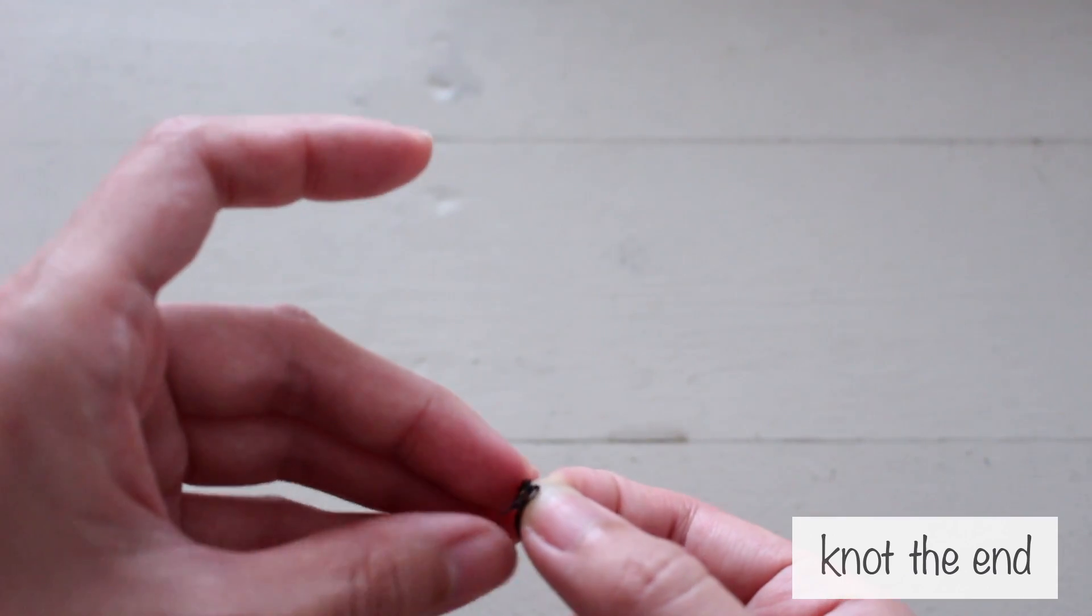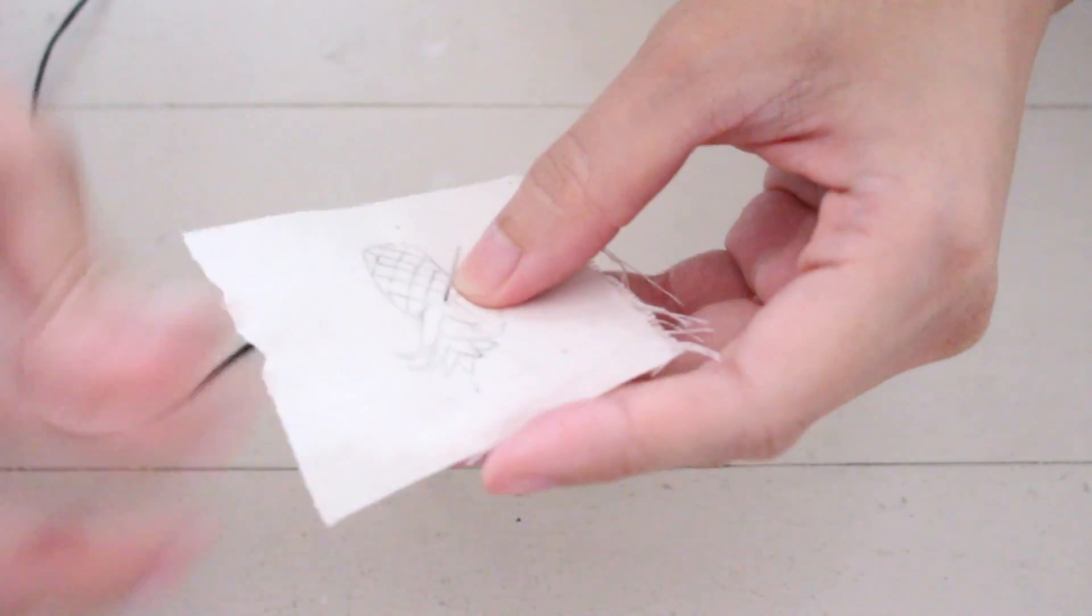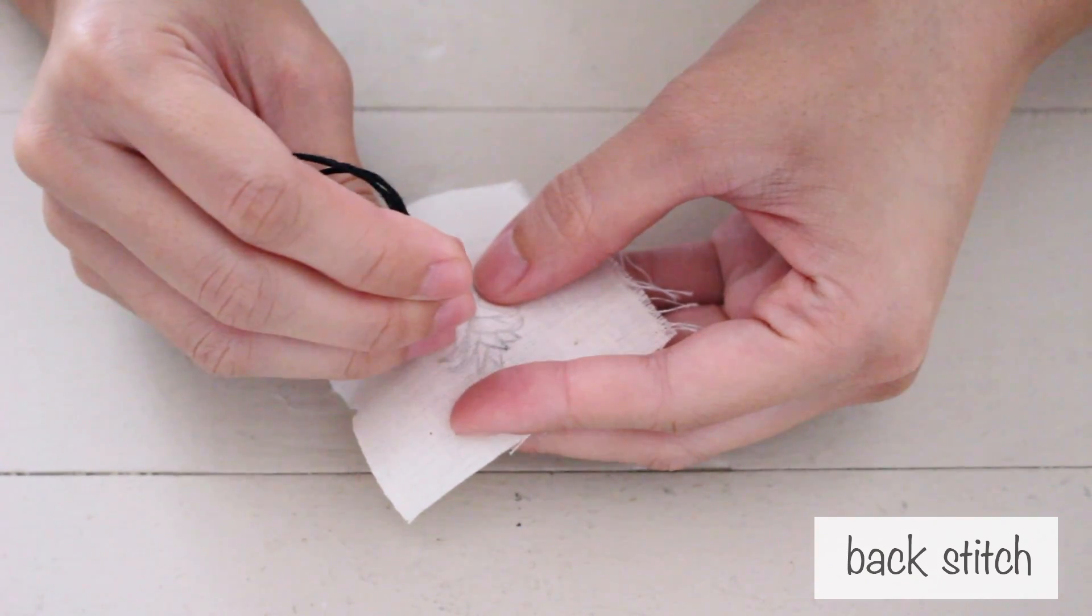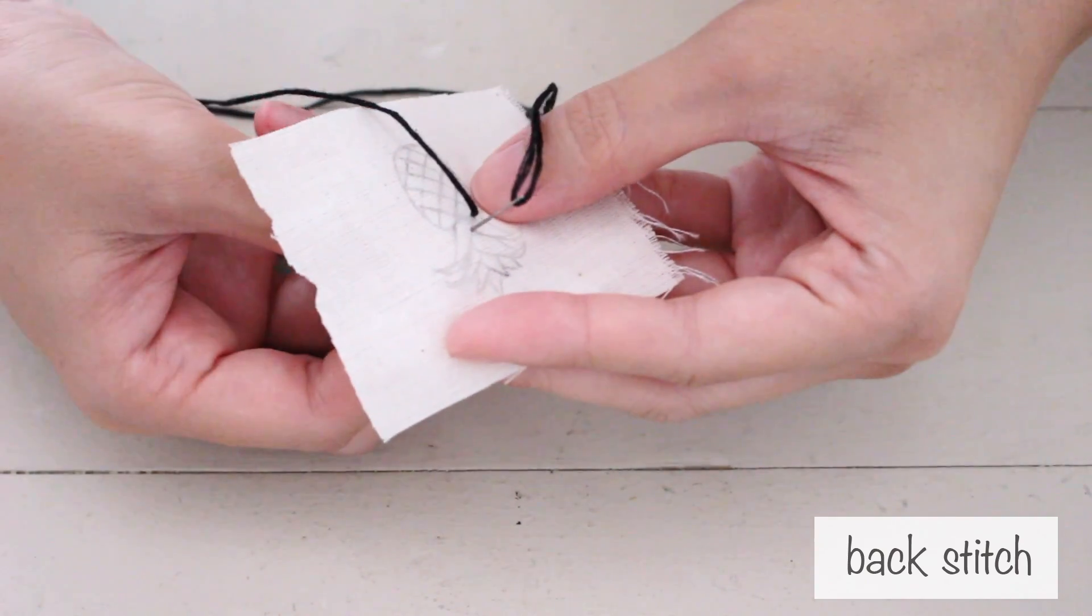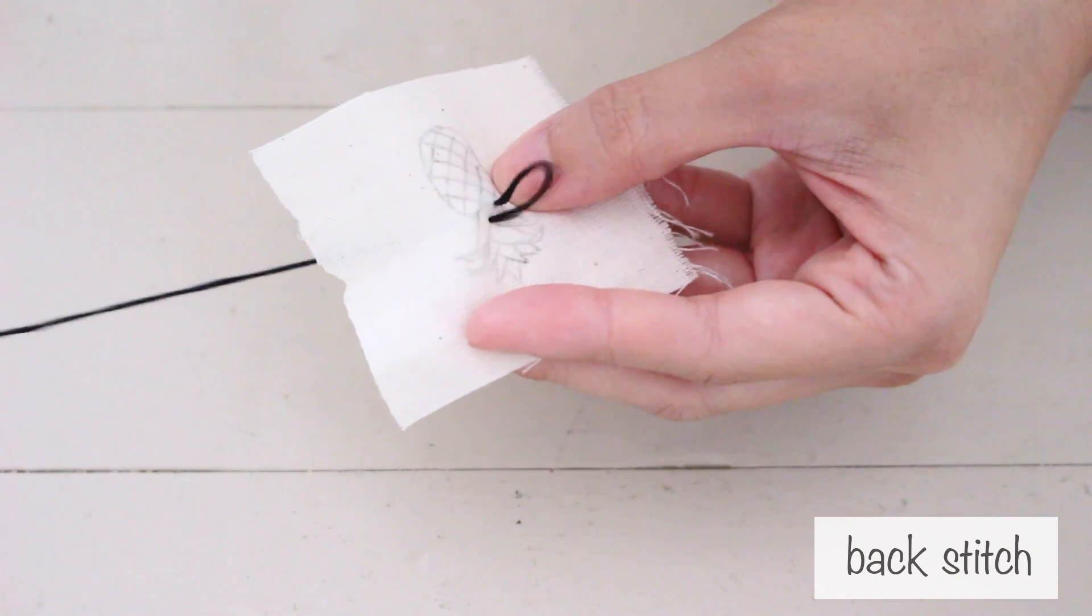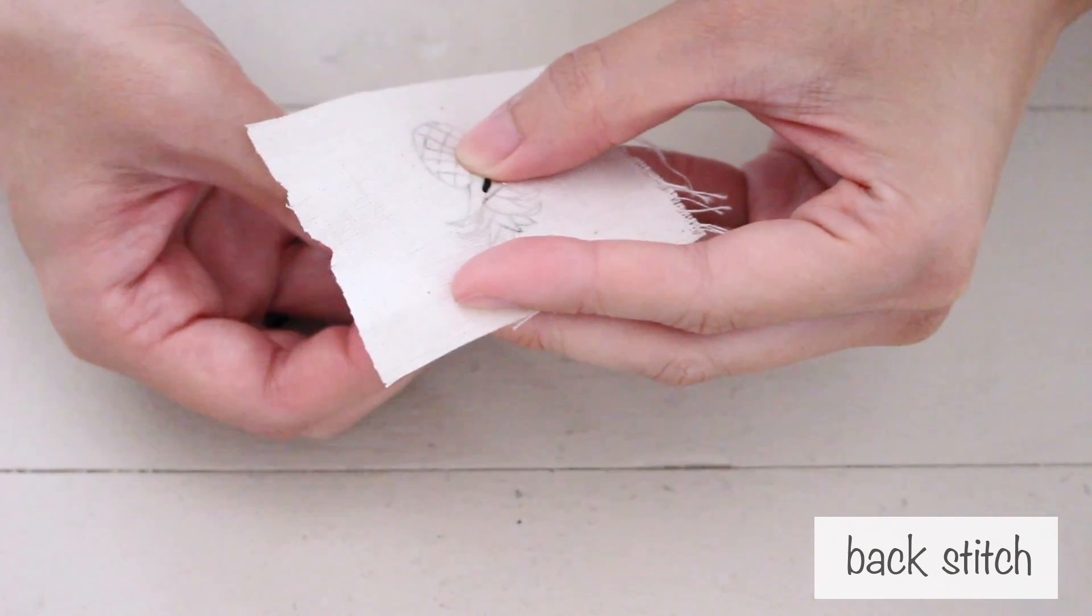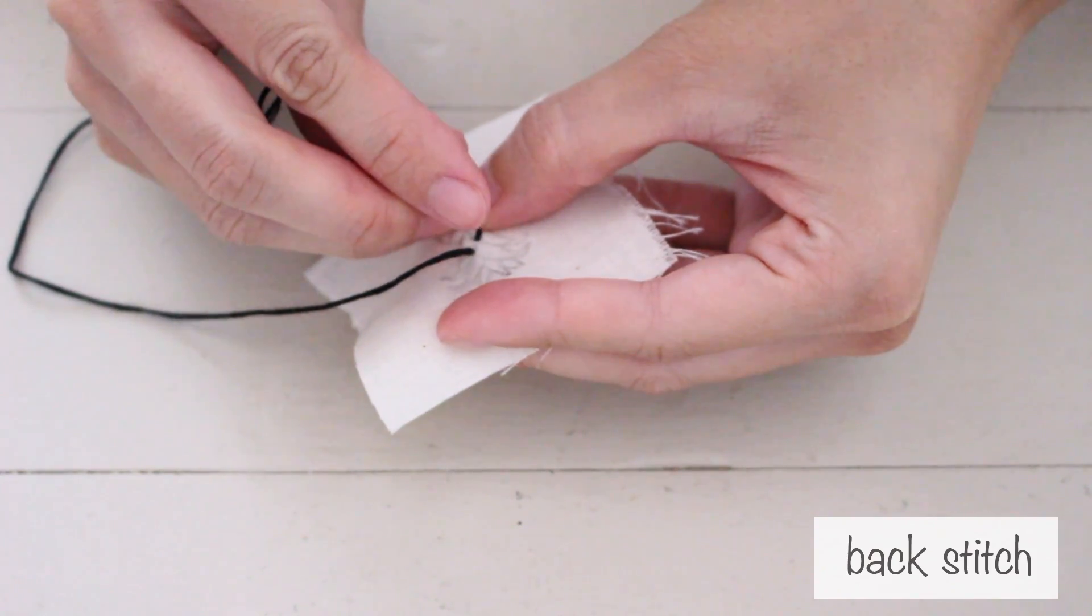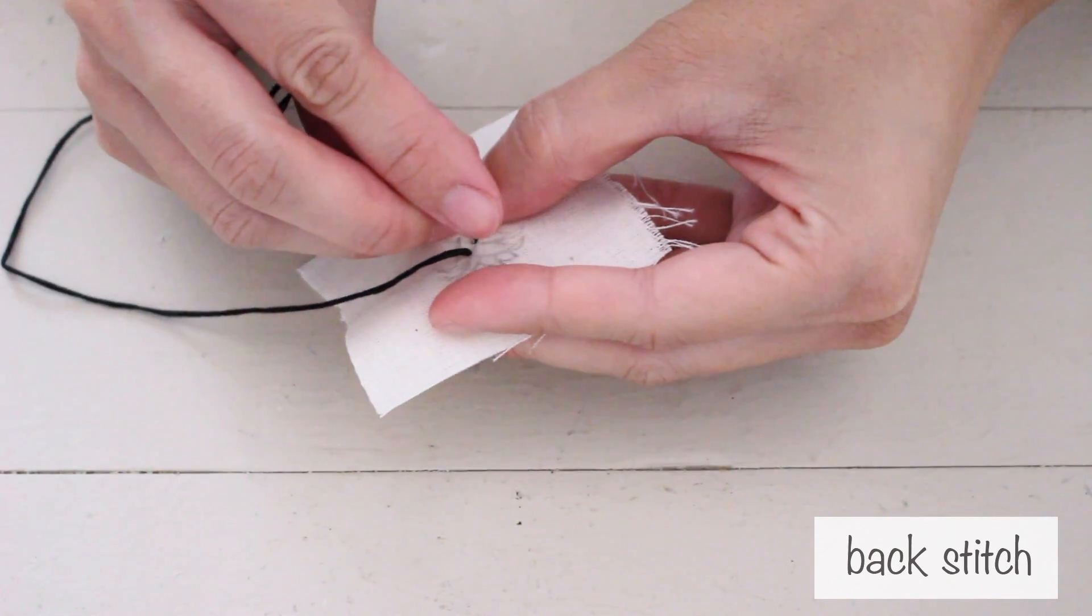I used the same stitch in all my patterns called a back stitch. To do this, start from the back of the fabric and push the needle up. Move it a little and go back down creating a stitch. Push the needle up again. Then, go back to the previous stitch creating a back stitch.